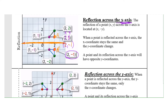All reflected points follow this rule: the x-coordinate stays the same and the y-coordinate becomes the opposite, because the x-coordinate tells how far to move left or right — that stays the same when reflecting across the x-axis. Only the y-coordinate flips. Remember: x-axis reflection → x-coordinate stays the same.